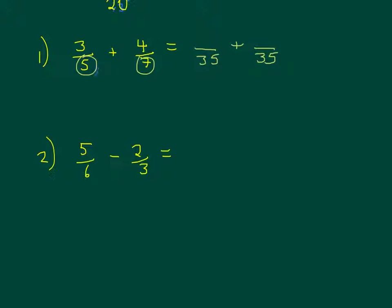The 5 has been times by 7, so I need to times the numerator by 7: 3 times 7 is 21. And the 7 has been times by 5, so I times the numerator by 5: 4 times 5 is 20. I can add them now keeping the denominator the same: 21 plus 20 is 41. If you got 41 over 35, well done — that is the answer. But you get an extra mark if you realised this is an improper fraction. How many 35s are in 41? 1, and the remainder is 6, with 35 staying the same. Extra well done if you got 1 and 6 over 35.